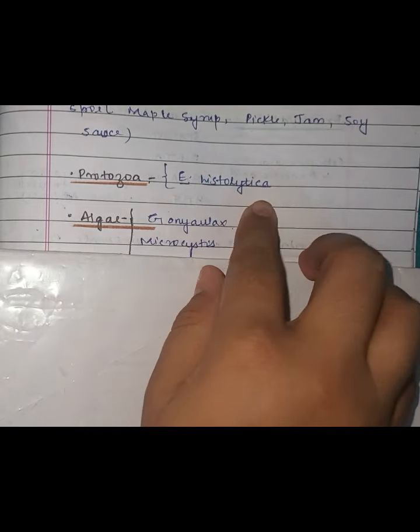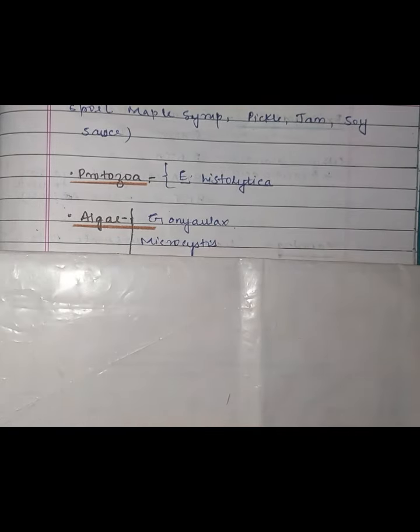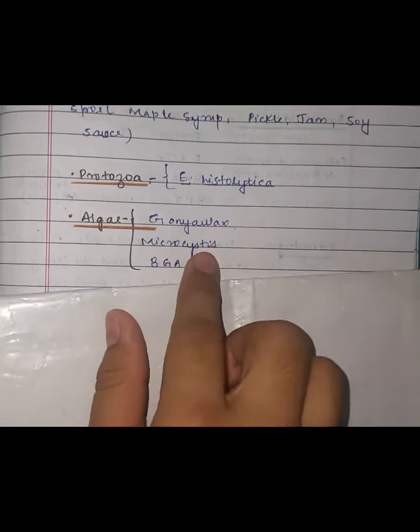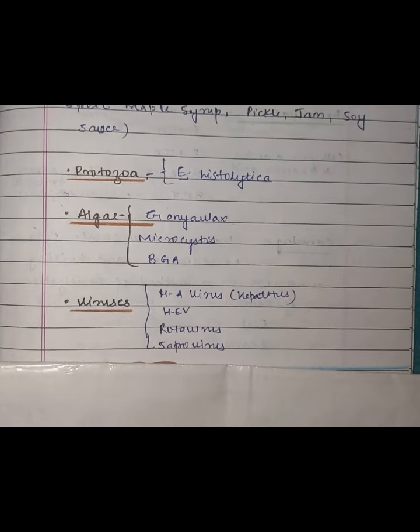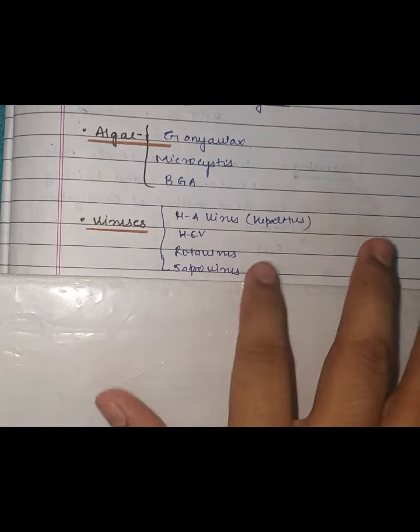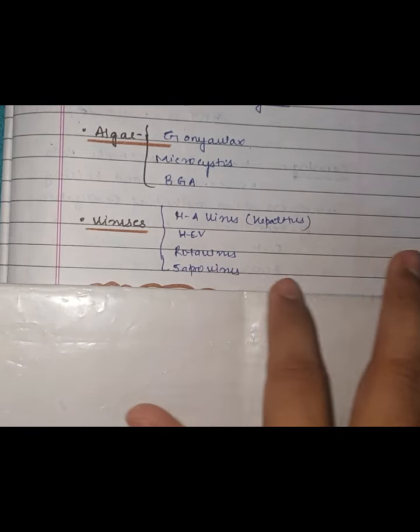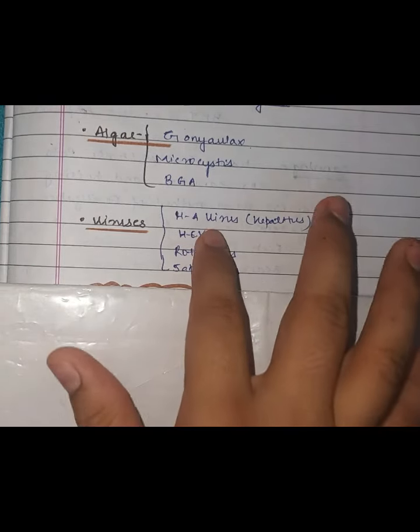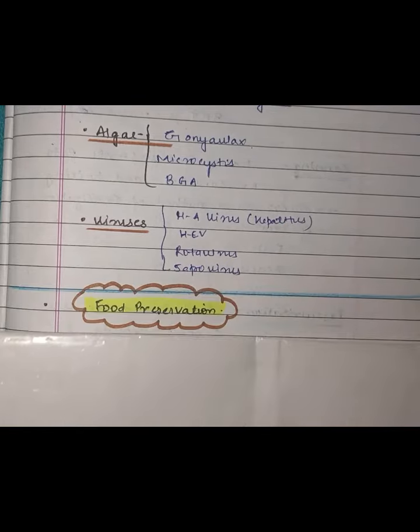Protozoans like Entamoeba histolytica can cause food spoilage. Algae like Gonyaulax and blue-green algae (BGA) are also involved. Viruses like Rotavirus, Sapovirus, Hepatitis E virus, and Hepatitis A virus are microbes that cause food spoilage and disease.